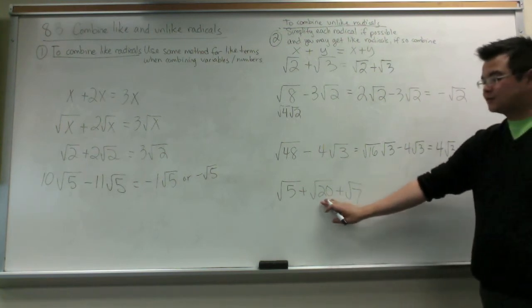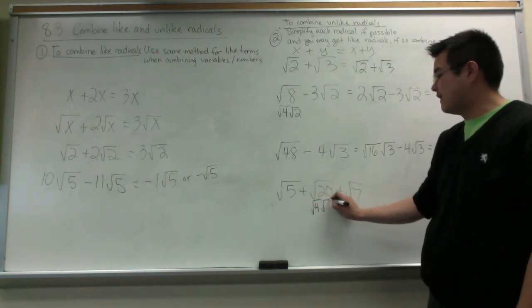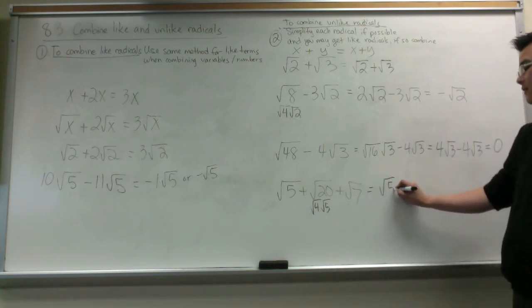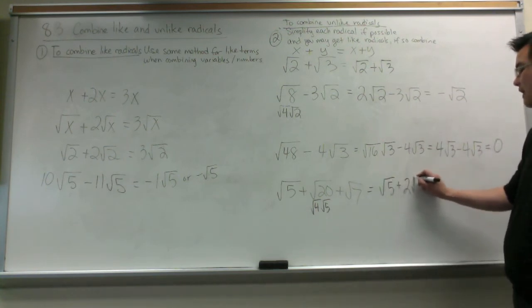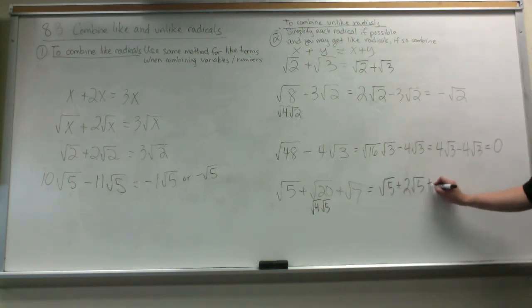In my last example, root 20 can be simplified. That can be broken up into 4 and 5. So this is rewritten, it would be root 5 plus 2 root 5 because the square root of 4 is 2 plus root 7.